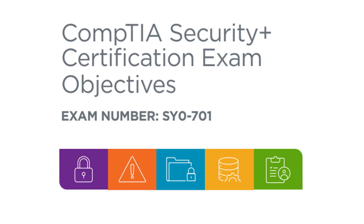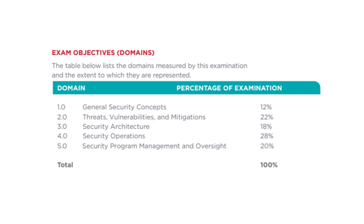Welcome to this video on Objective 2.2: Understanding Common Threat Vectors and Attack Surfaces. In today's digital landscape, cyber threats are constantly evolving, making it crucial to know where and how these attacks might occur. We'll dive into the most common threat vectors like phishing, malware, and social engineering, and explore the various attack surfaces that could be exploited, from your network infrastructure to the software applications you use every day. By the end of this video, you'll have a clear understanding of how these threats operate and how to better protect your systems against them. Let's get started.